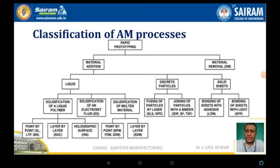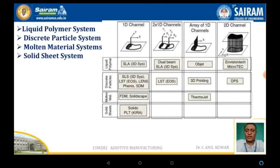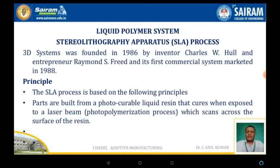Welcome back for further sessions in the additive manufacturing process. In the previous session, we discussed the classification of additive manufacturing processes. In a simpler way, additive manufacturing can be classified into four types: liquid polymerization systems, discrete particle systems, molten powder material systems, and solid sheet systems. The first one we are discussing is the liquid polymer systems.